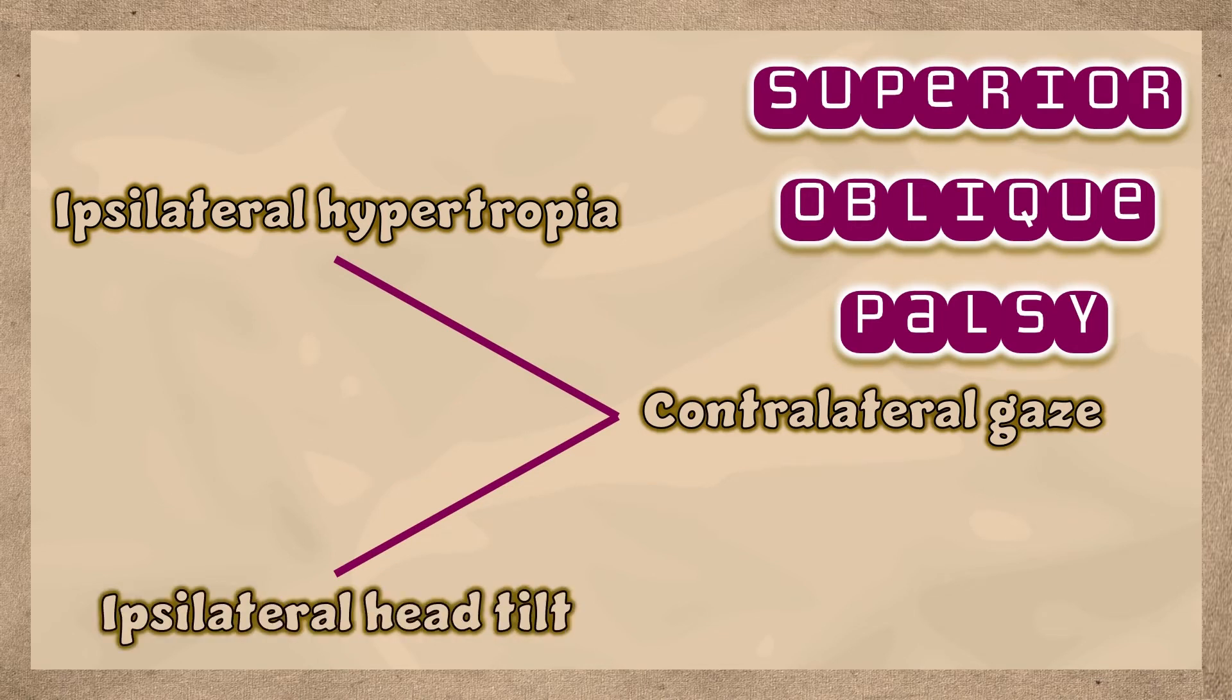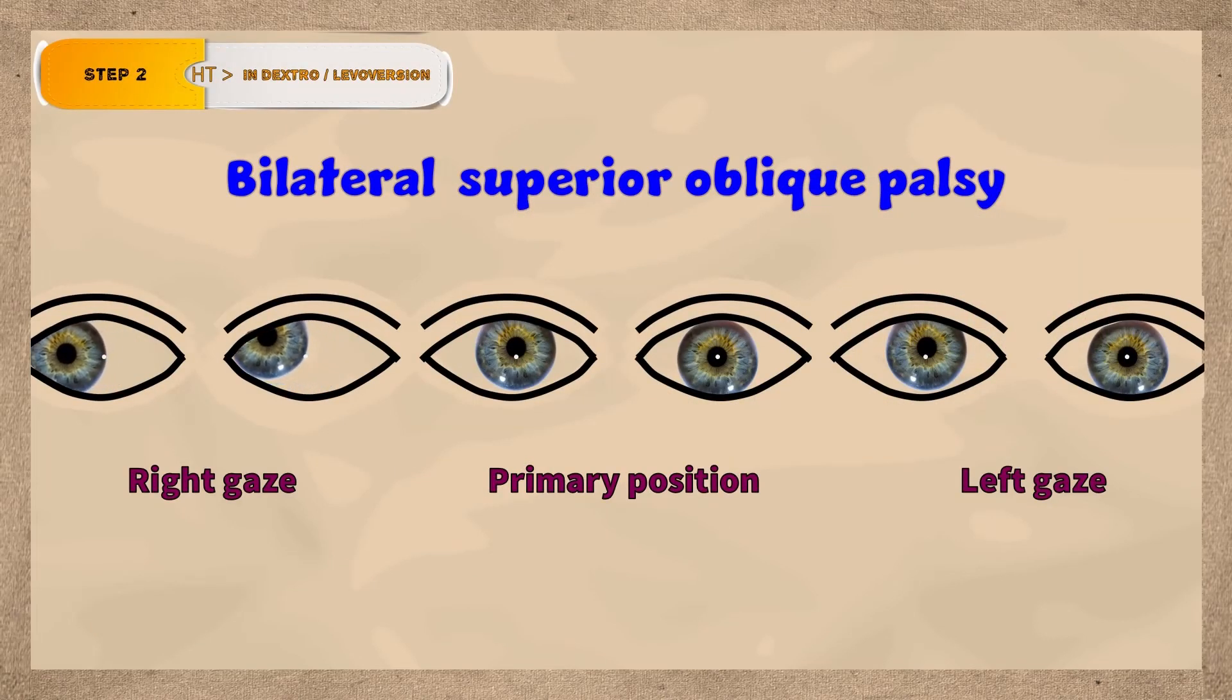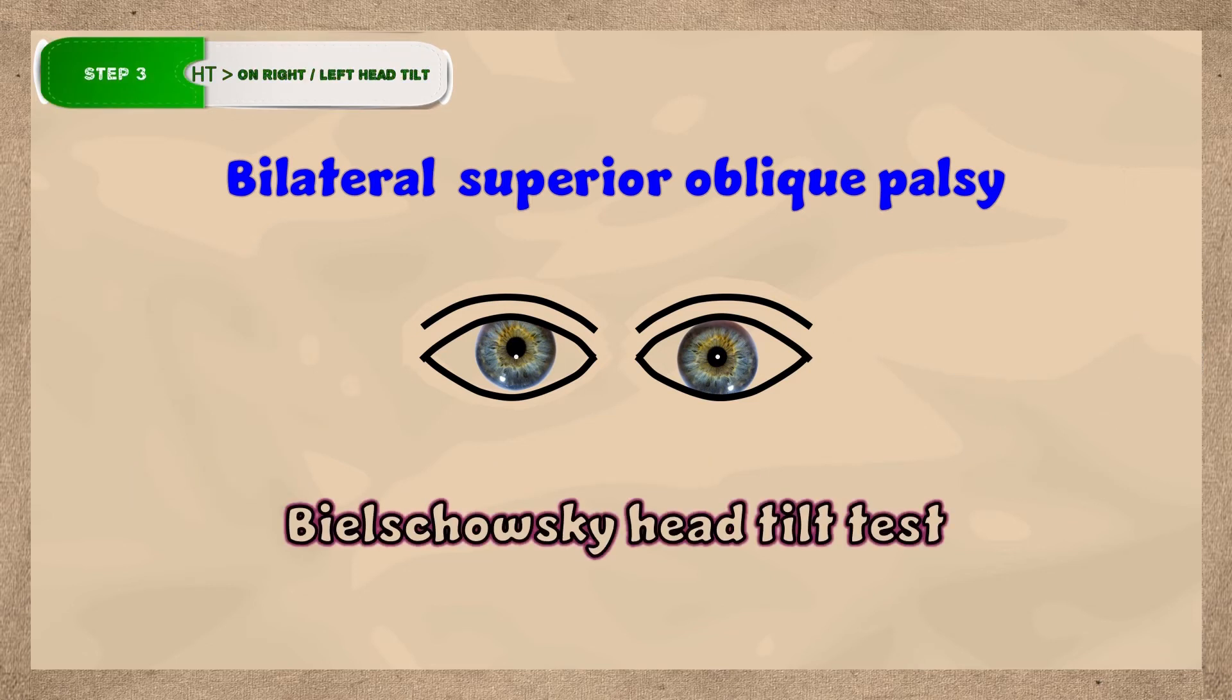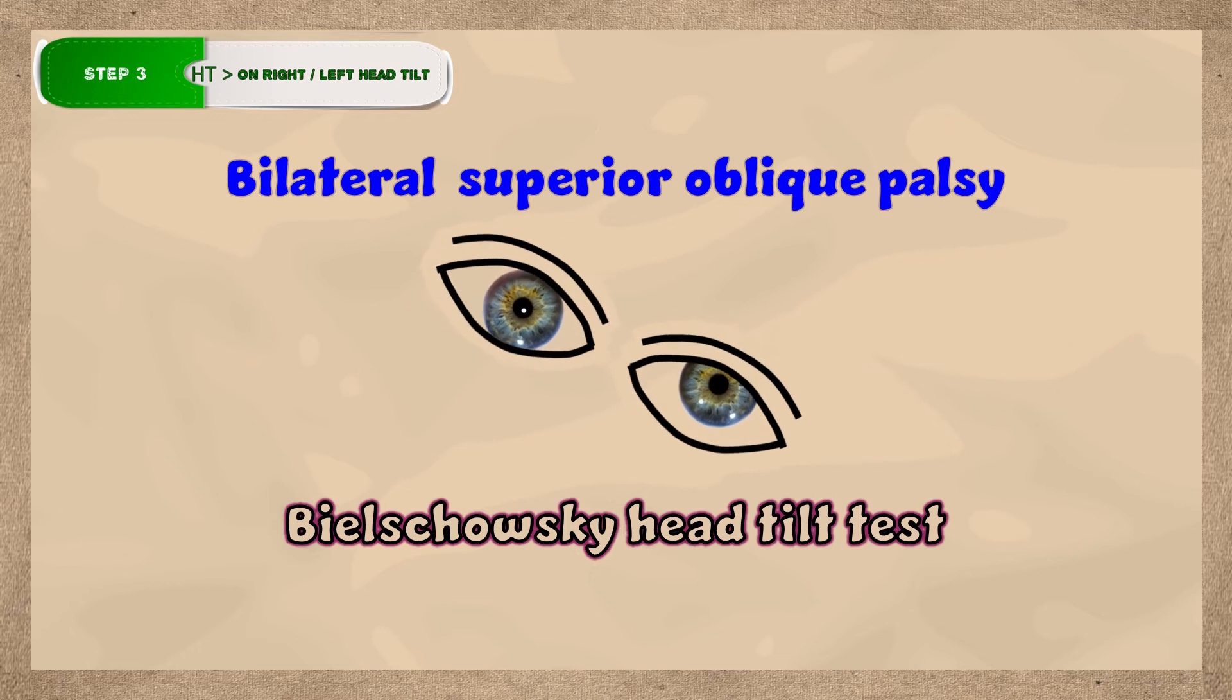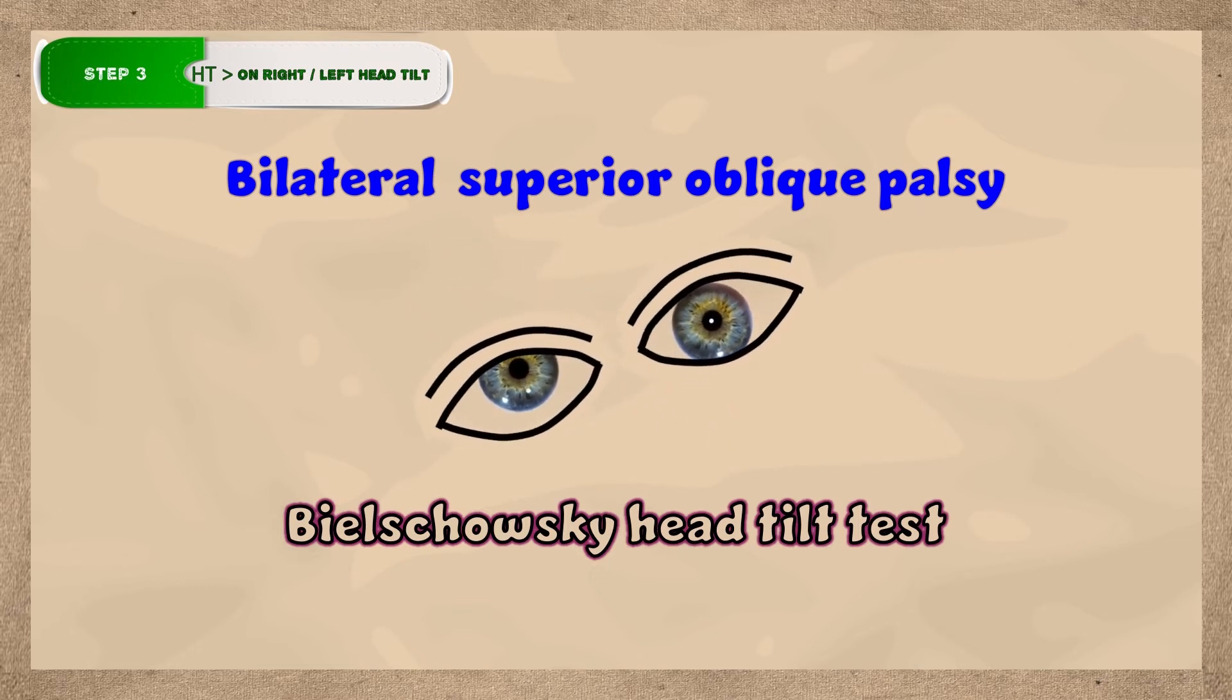In a bilateral superior oblique palsy, there will be hypertropia of each adducting eye on lateral gaze. And in the head tilt test, there is hypertropia of the left eye in left head tilt and the right eye in right head tilt.